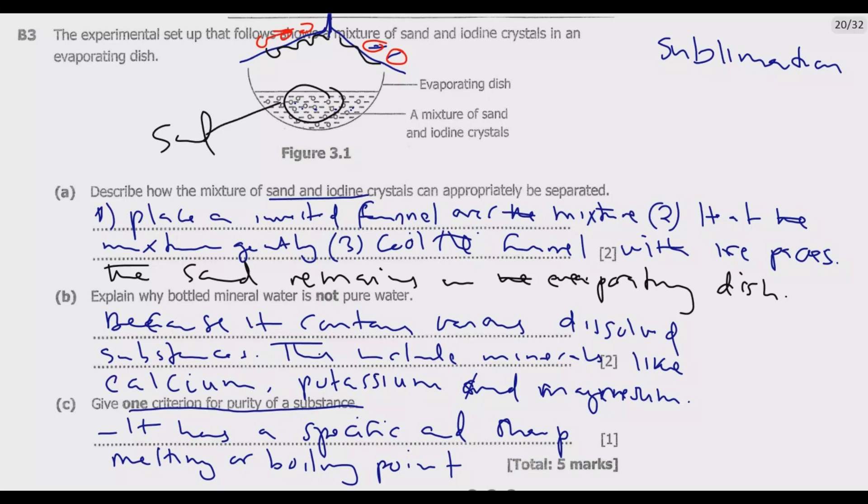Pure substances have uniform composition throughout - the same properties are maintained because it has the same composition of matter. Number two: uniform density.